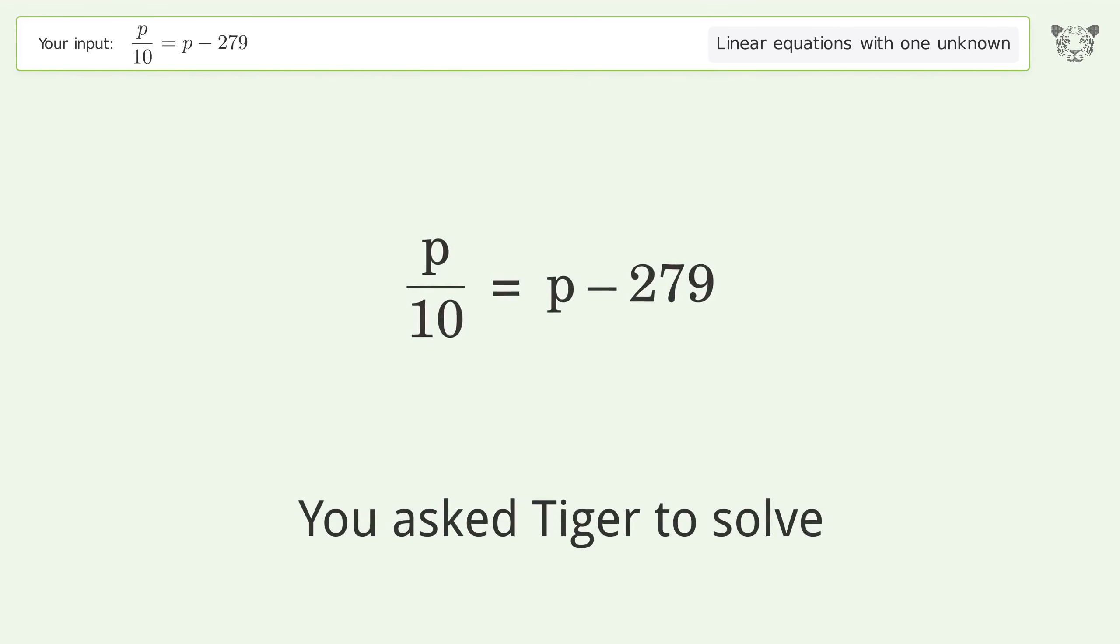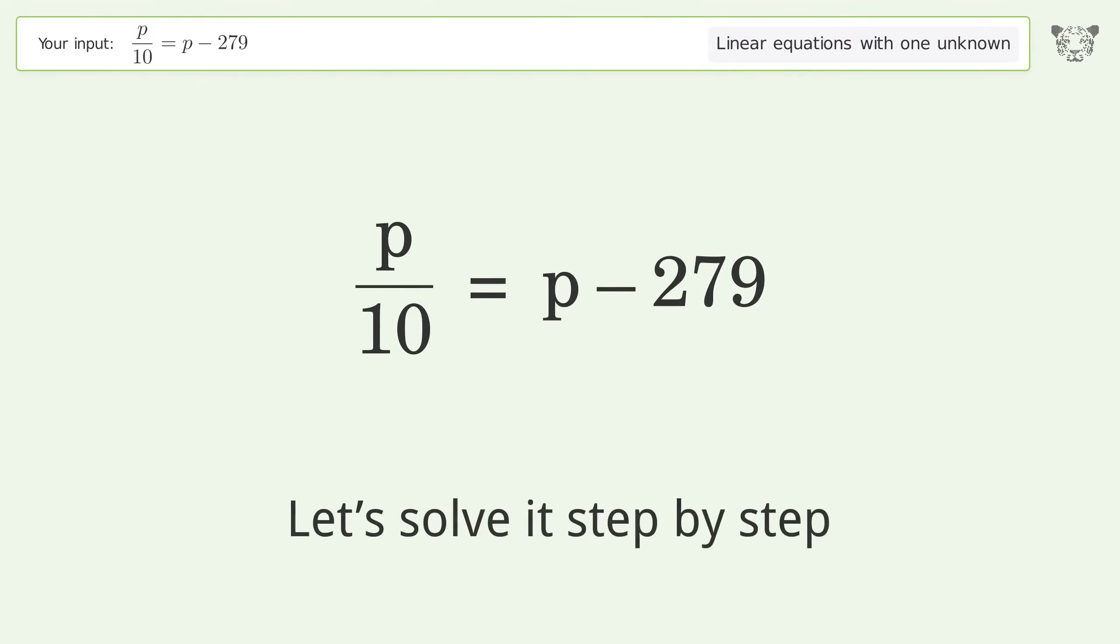You asked Tiger to solve. This deals with linear equations with one unknown. The final result is p equals 310. Let's solve it step by step.